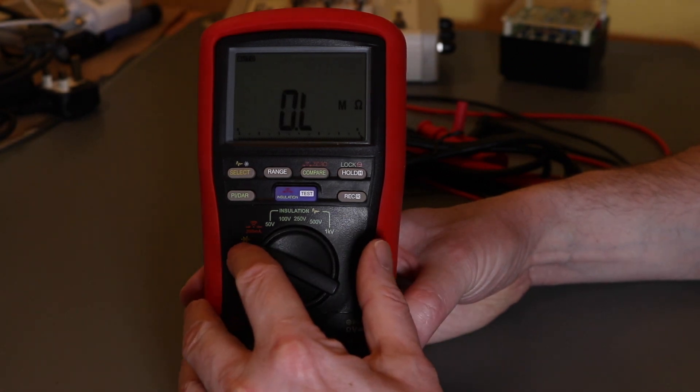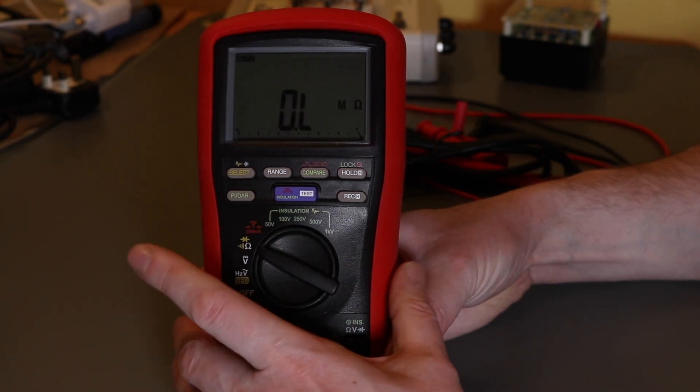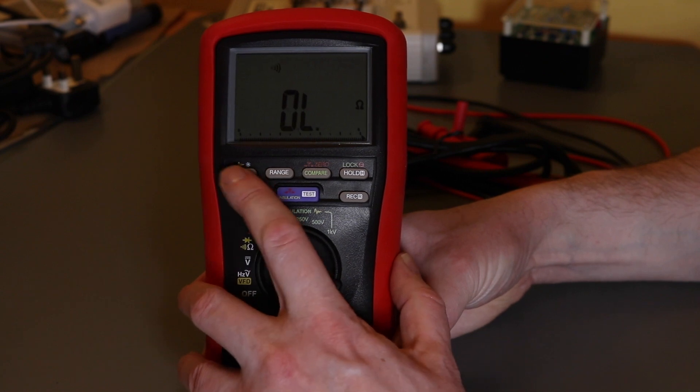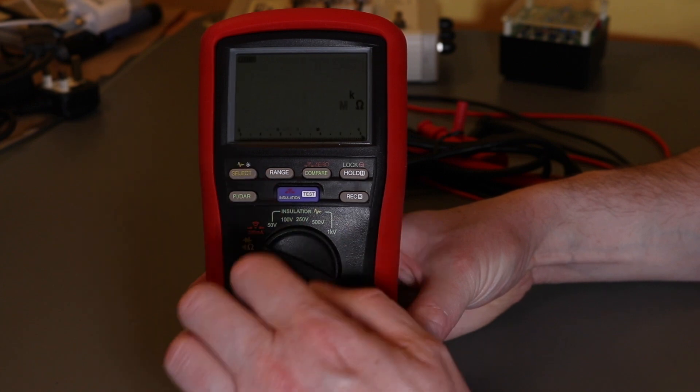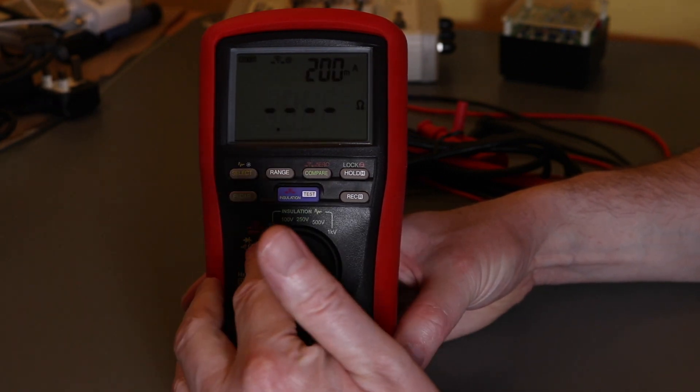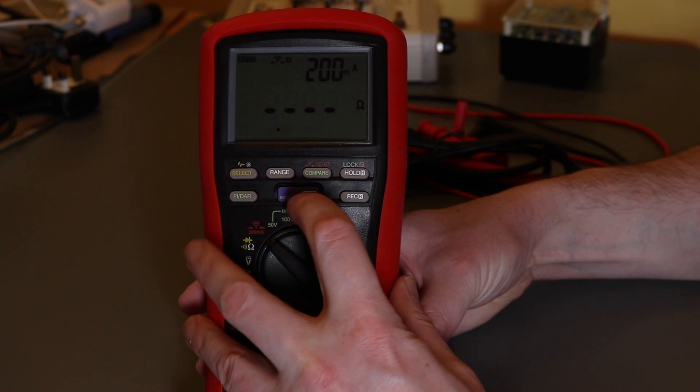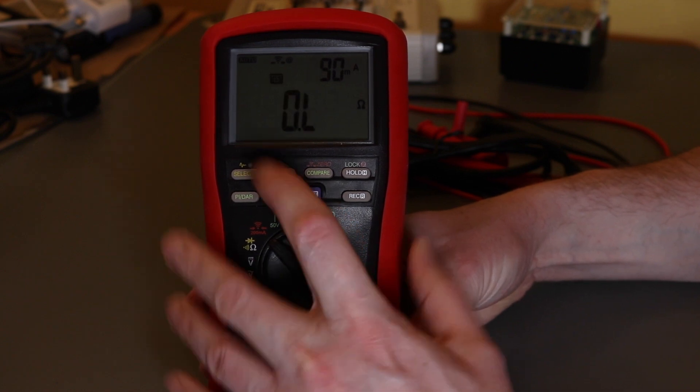We've got ohms, continuity, and diode test. They are selected from the select button here, which is quite sensitive actually. There's continuity, there's diode, and then you have 200 milliamp earth test which is operated off of the test button.